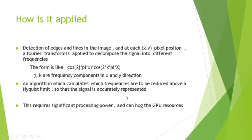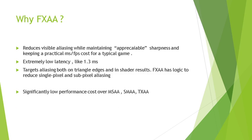The algorithm calculates which frequencies to reduce above the Nyquist limit — the limit at which the signal is accurately represented. The main problem is that this requires significant processing power and can hog GPU resources. Anti-aliasing can drop performance by around 50 percent, making research into more efficient methods highly desirable.